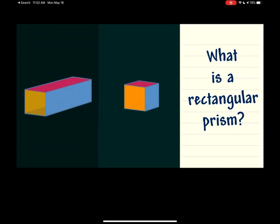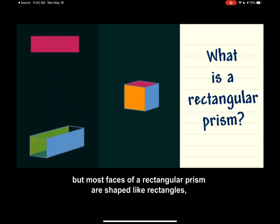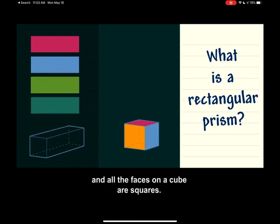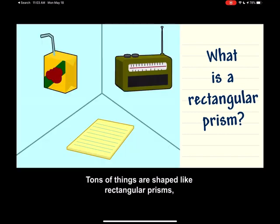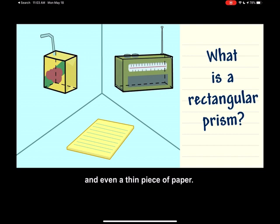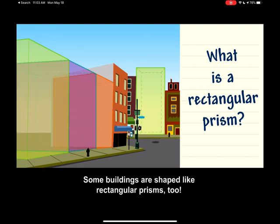But most faces of a rectangular prism are shaped like rectangles, and all the faces on a cube are squares. Tons of things are shaped like rectangular prisms, like a juice box, radio, and even a thin piece of paper. Some buildings are shaped like rectangular prisms, too.